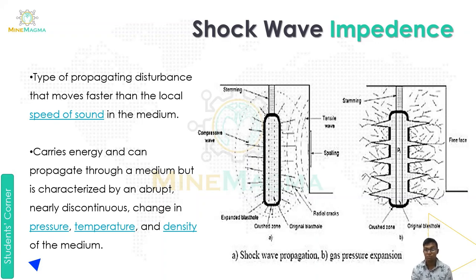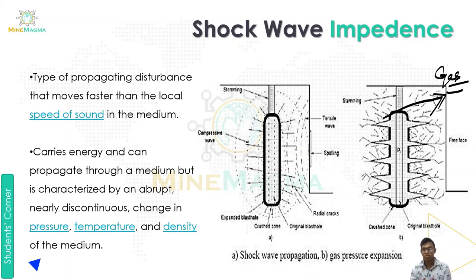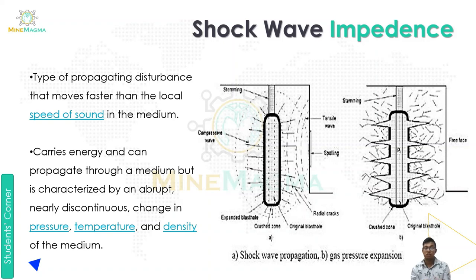The next part is gas pressure expansion. It is the same setup — we have our stemming, our borehole, and the crushed expansion zone. The gases expand outward. You can see the shockwaves go out, and the expanded blast hole is broken. The gases escape outward. So these are our two types: shockwave propagation and gas pressure expansion, both moving faster than the local speed of sound in the medium.